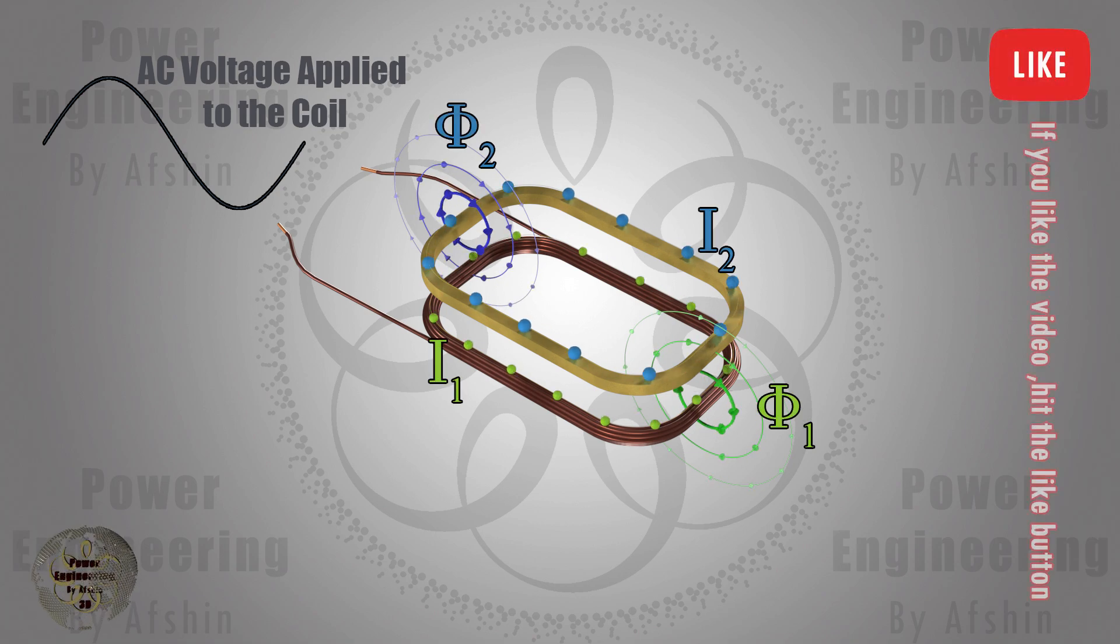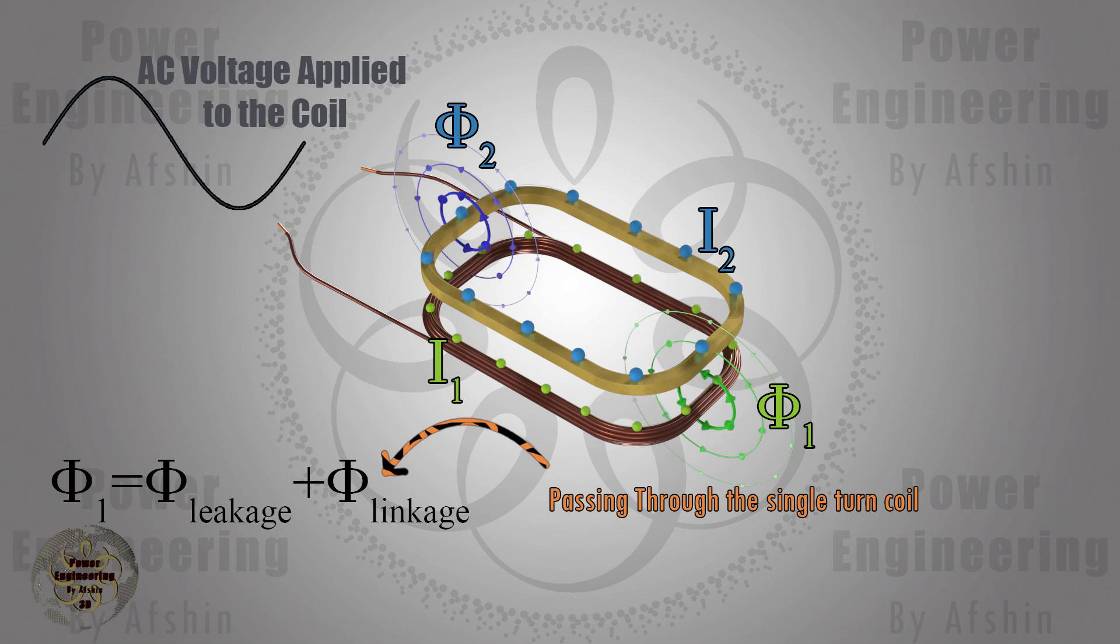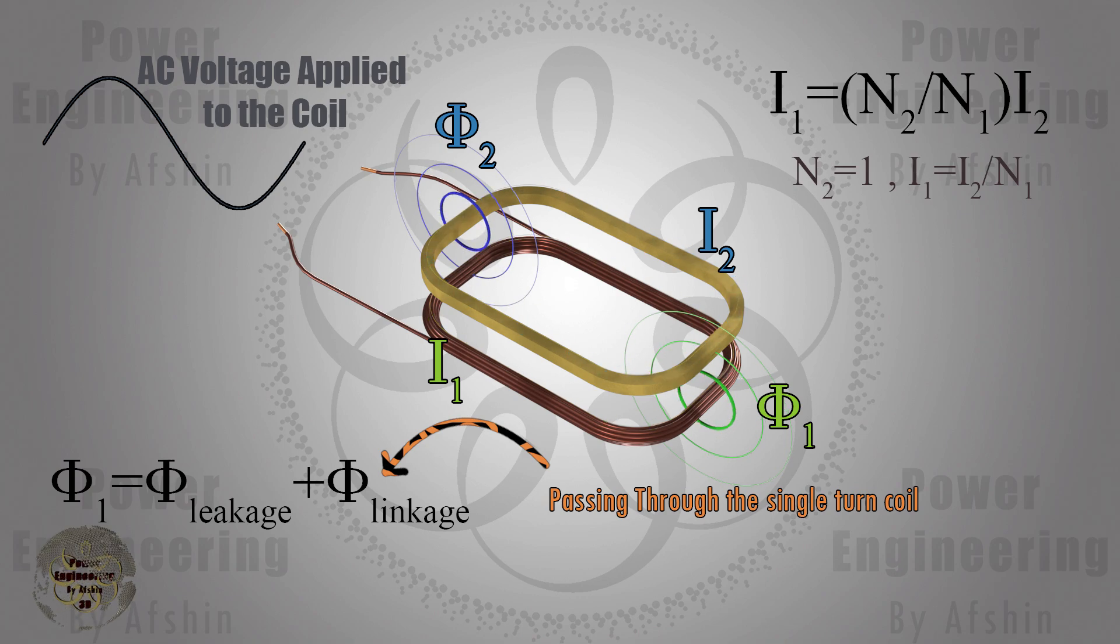Before the secondary loop is closed, the primary coil's current depends only on the flux it produces. However, once the secondary loop is closed, the primary coil's current is influenced by two factors: the leakage flux, which does not pass through the secondary, and the linkage flux, which induces current in the secondary. According to transformer principles, the current flow in the secondary also causes current flow in the primary.